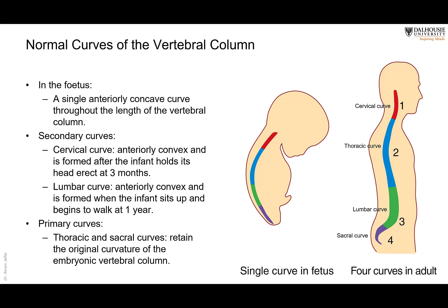The vertebral column has curvatures. In the fetus, there is a single primary curvature. After birth, two secondary curvatures develop. The first secondary curvature is the cervical curvature, which is convex forward and forms when the baby begins to hold up its head — typically after the first three months of life. The second secondary curvature is the lumbar curvature, also convex forward, which develops when the baby begins to sit and especially when it begins to walk.